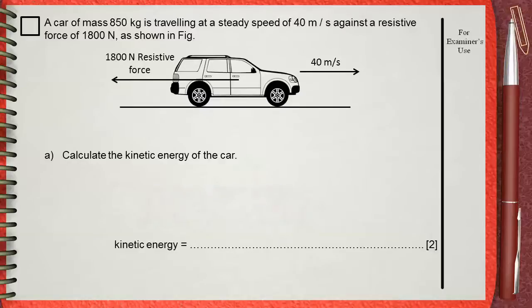The first thing we do is identify our givens. The 850 kilograms is the mass, 40 meters per second is speed V. Resistive force is 1,800 newtons, considered as force F, but it's opposing the motion, not the driving force.